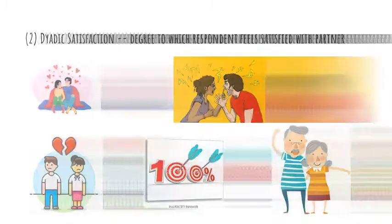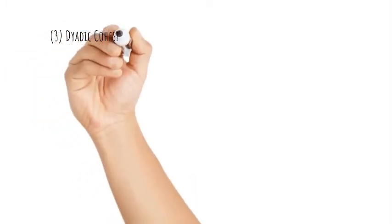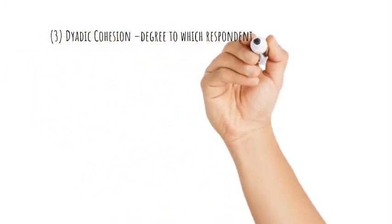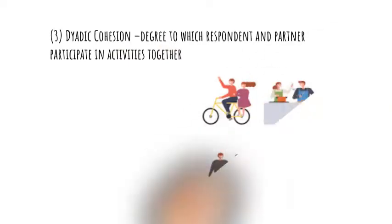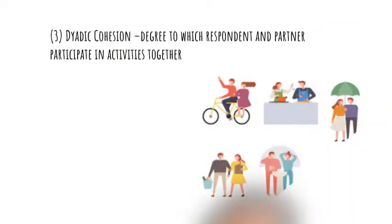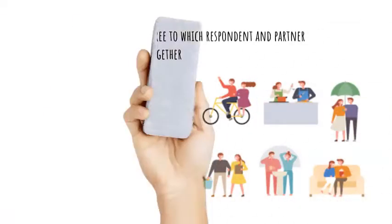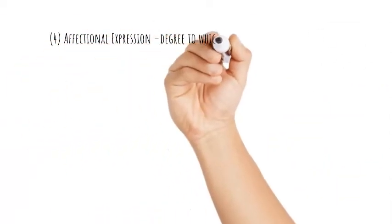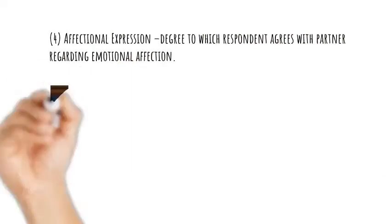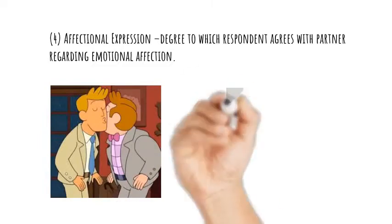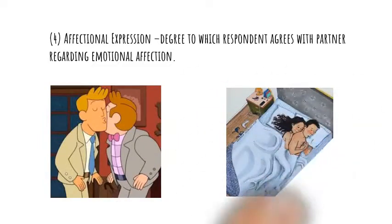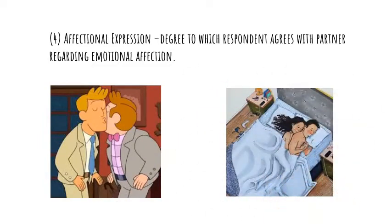Dyadic cohesion is the degree to which the respondent and partner participate in activities together. It assesses the common interests and activities shared by the couple. Affectional expression is the degree to which the respondent agrees with their partner regarding emotional affection, measuring individual satisfaction in the expression of affection and sex in the relationship.